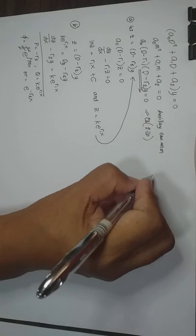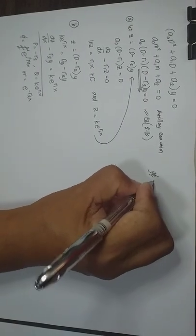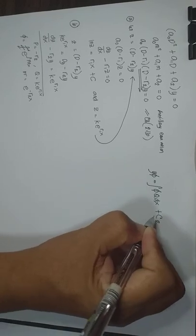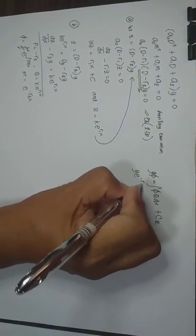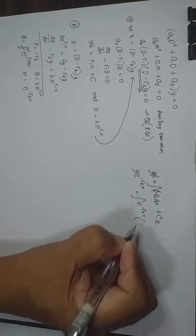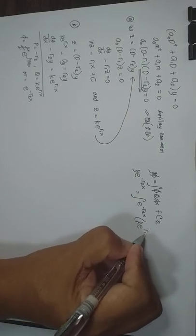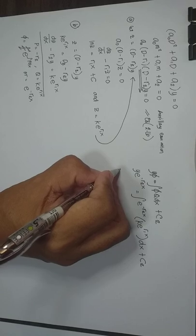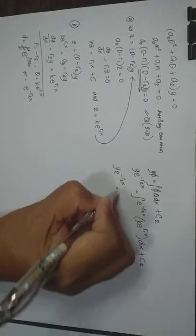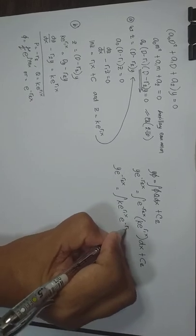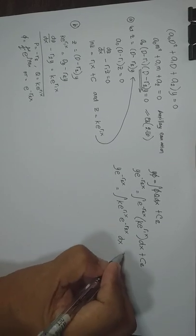For the solution of the first-order linear equation, phi Y equals the integral of phi Q dx plus C-sub-2. So Y times e raised to negative r-sub-2 x equals the integral of e raised to negative r-sub-2 x times k e raised to r-sub-1 x, dx plus C-sub-2.